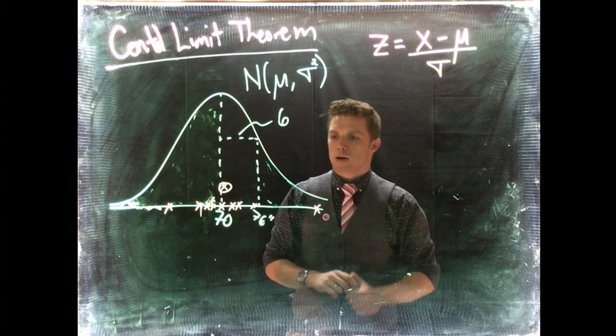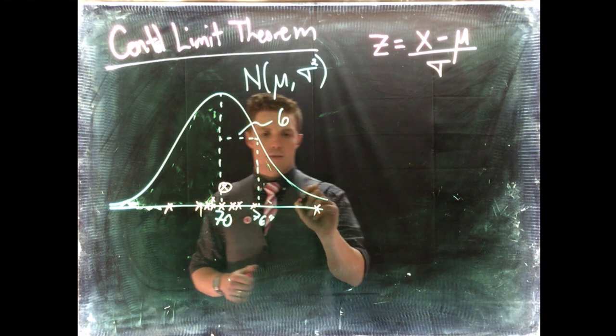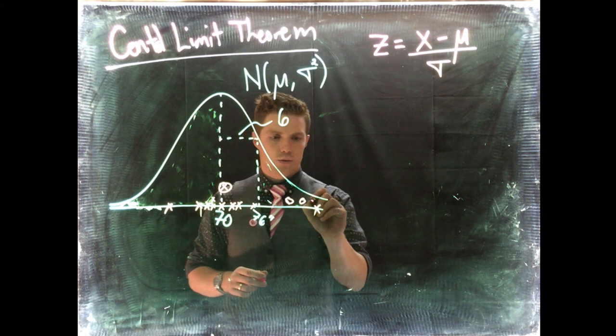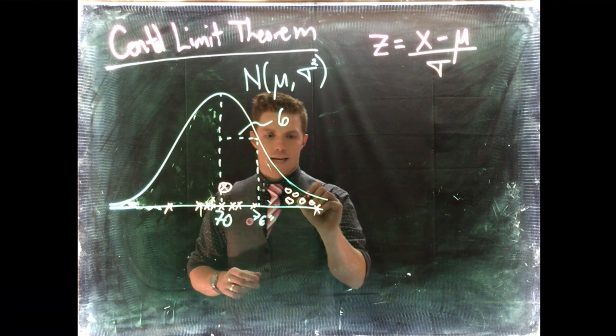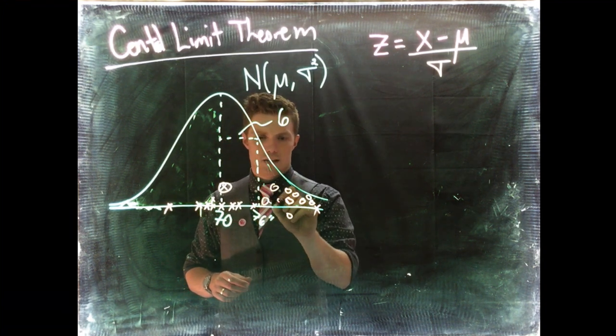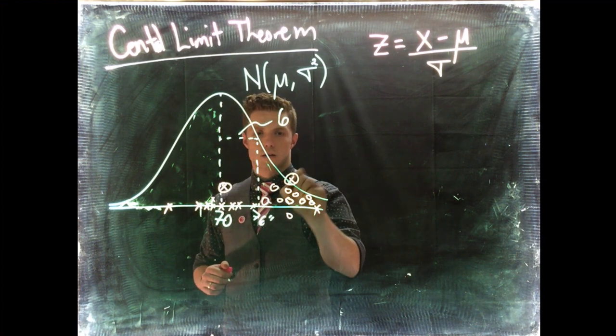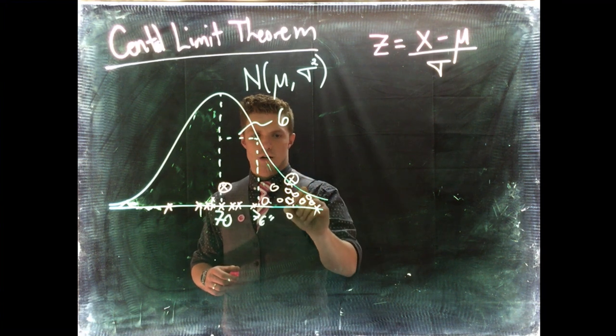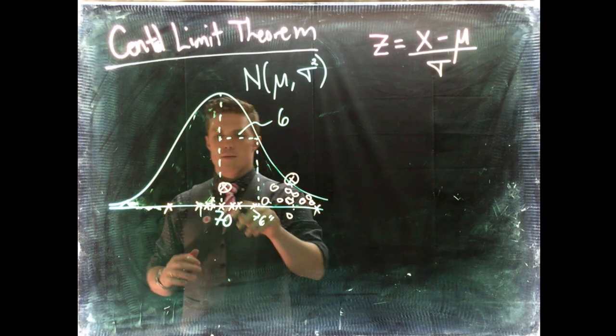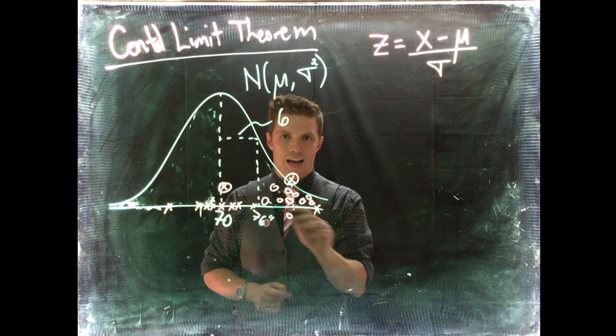Now my question is, how hard would it be to see something where we have 10 people and the average of those guys would be at this point on our x-axis? How likely is that going to happen?